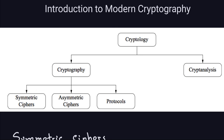I want to show you this kind of chart here, this diagram. What we are doing here is this part — we are interested in cryptography. Basically what that is, we are trying to obscure the message, so we are trying to encrypt. This is the science of encryption, cryptography.